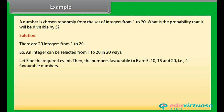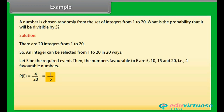The numbers favorable to E are 5, 10, 15, and 20 — that is, 4 favorable numbers. Probability of event E is equal to 4 by 20, which equals 1 by 5. Hence, the probability that the number selected is divisible by 5 is 1 by 5.